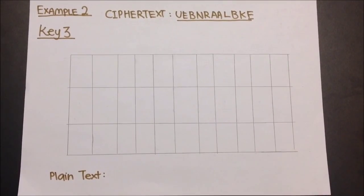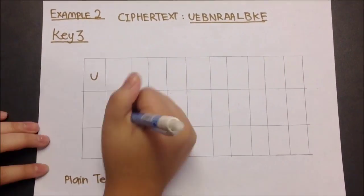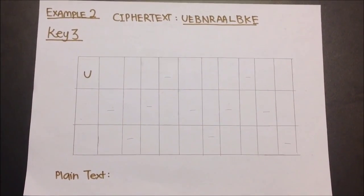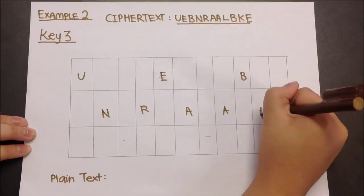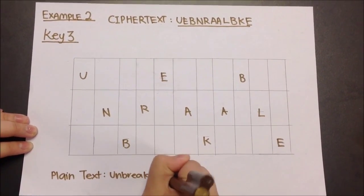As I explained, first fill the first box with the first letter in the cipher text. Next, fill in the dashes, then replace the dashes with letters in the cipher text. The completed grid will look like this and therefore, the plain text is unbreakable.